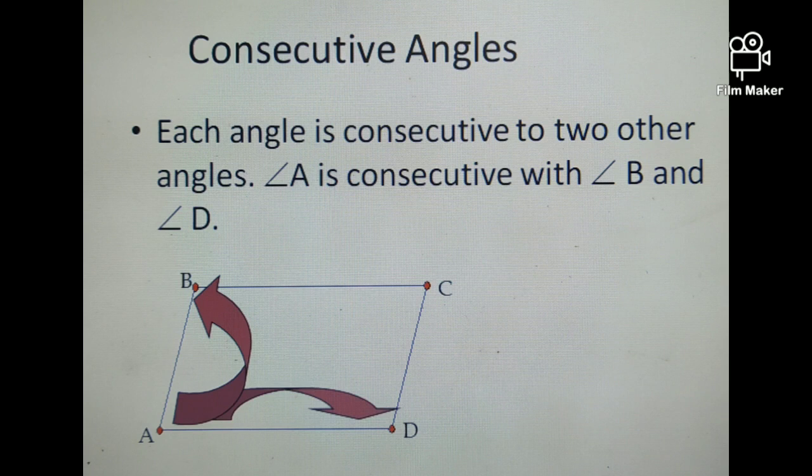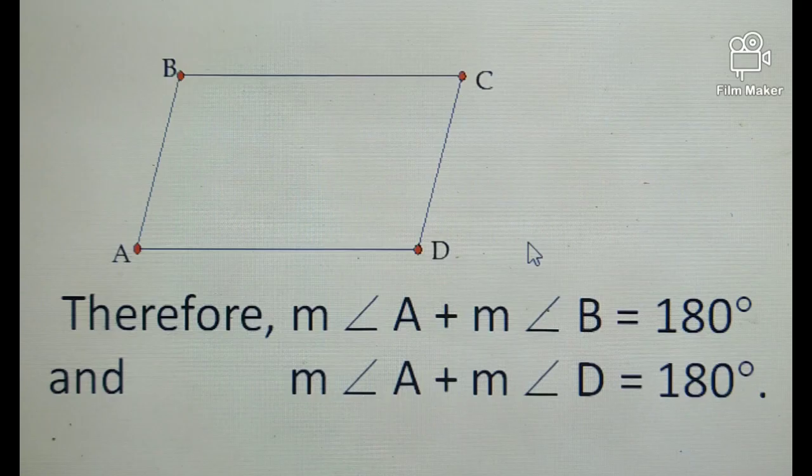According to our property number three, consecutive angles are supplementary, so angle A plus angle B is equal to 180 degrees. Same, if you add angle D and angle A, their sum is 180 degrees.